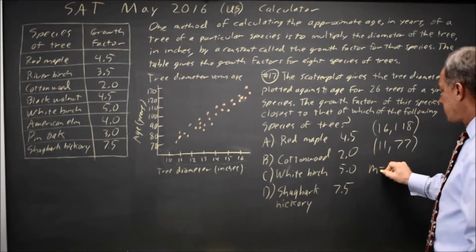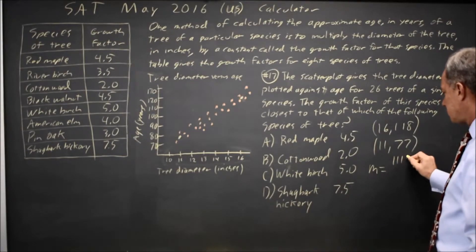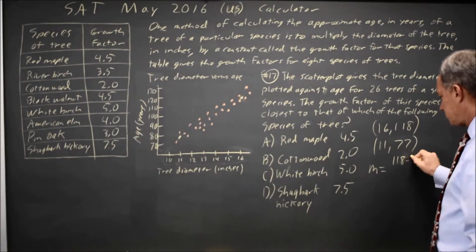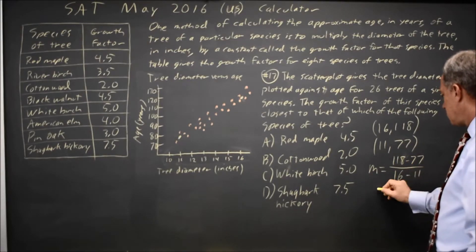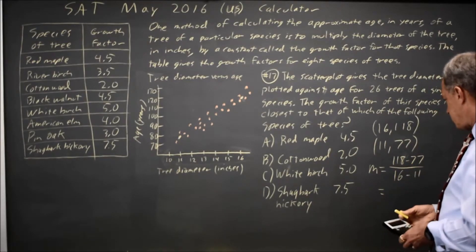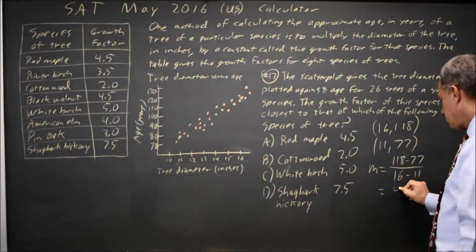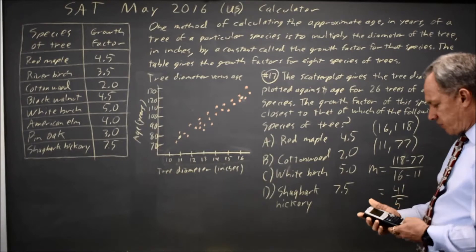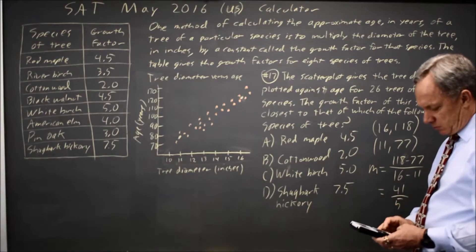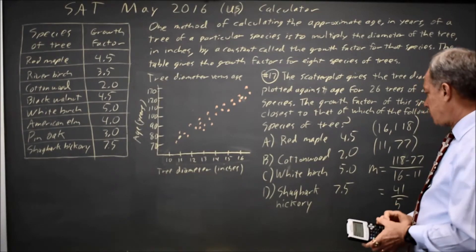So the slope is the change in y over the change in x, which is 118 minus 77 is 41, 16 minus 11 is 5, 41 over 5 gives me 8.2.